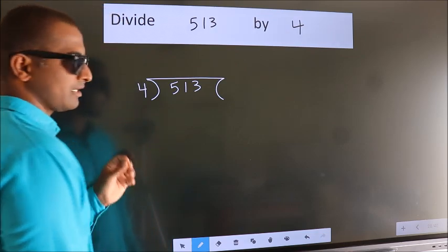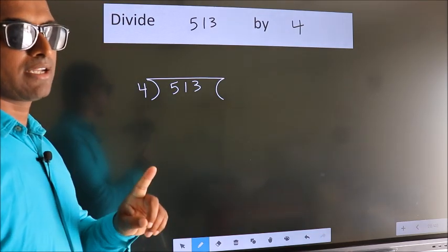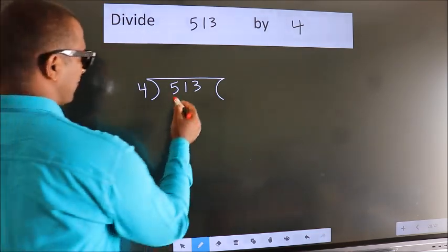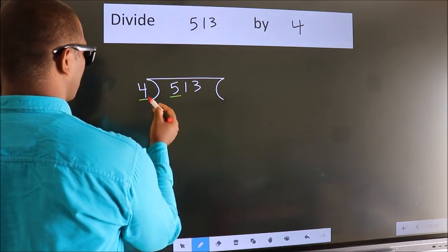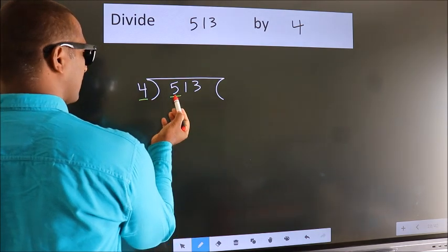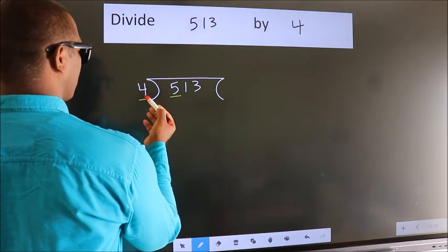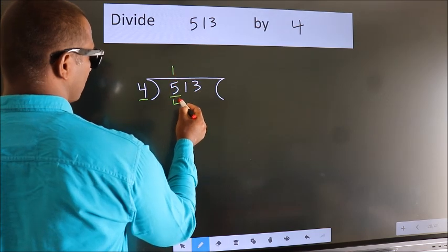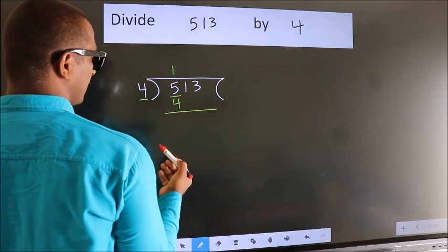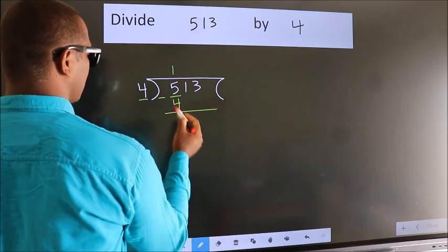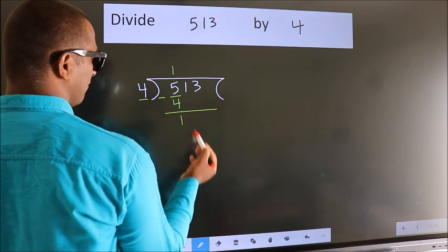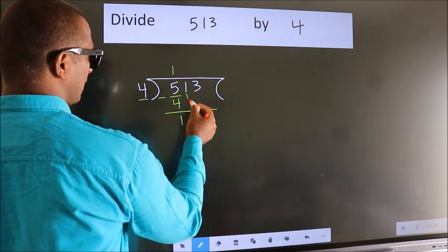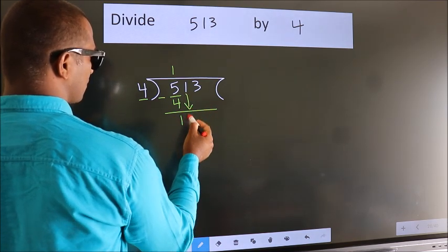This is your step 1. Next, we have 5 here. A number close to 5 in the 4 times table is 4 — one 4 is 4. Now we subtract, we get 1. After this, bring down the beside number, so 1 comes down.